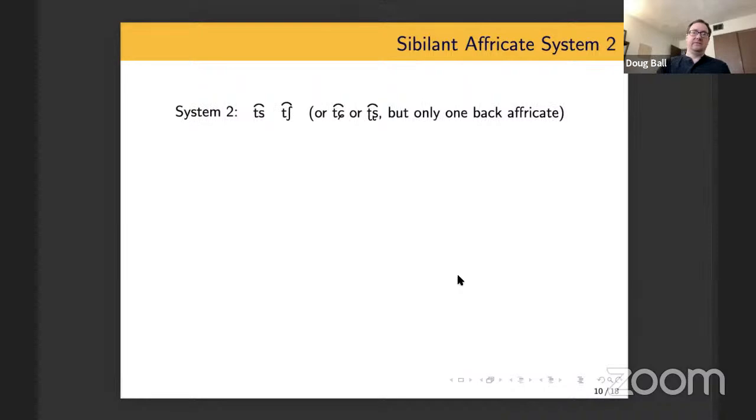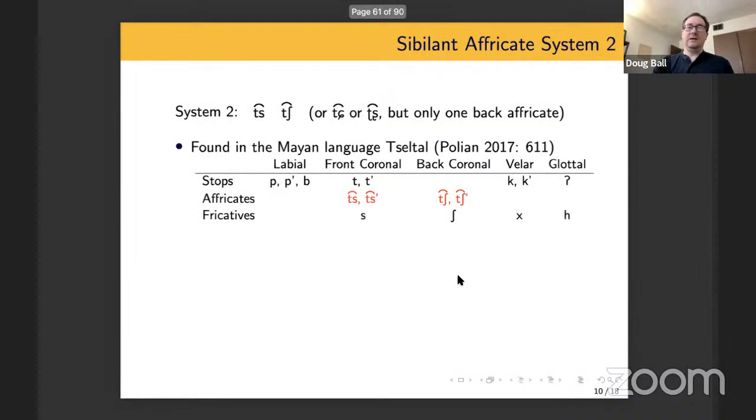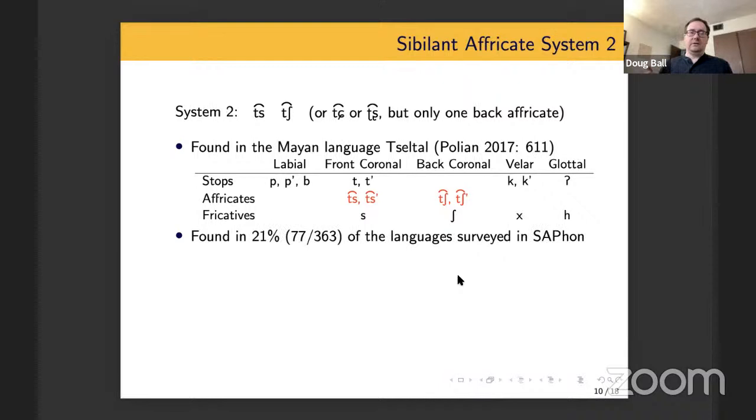There is a second sibilant affricate system that has a front sibilant affricate and a back sibilant affricate, prototypically TS and CH. And this is found in lots of languages. I decided to go with Tzeltal as an example, and you see the affricates right there. This is a list just of the languages obstruents, and you see that there are some ejective ones, but that doesn't really matter because we're looking mostly at place. So I found that system two was found or occurs in 21% of the languages surveyed in SAPhon, and I think it is reasonable that this is, in fact, the most common system that includes TS. So probably the path of least resistance, if you were really just making the average language and you want to include TS would be to use system two.